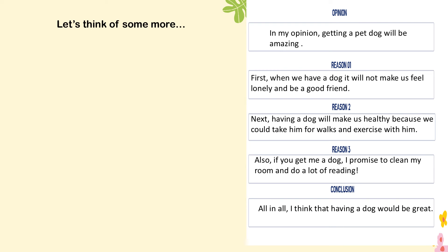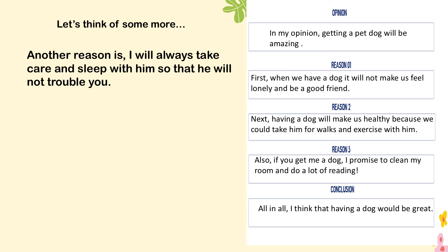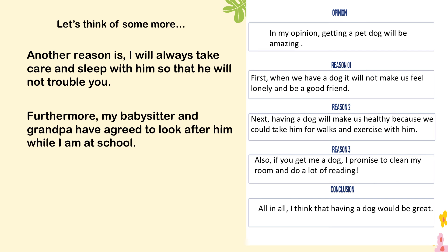Our opinion was to get a dog. Let's think of more reasons to convince our parents. Another reason: 'I will always take care and sleep with him so that he will not trouble you.' Furthermore — another sequencing word — 'my babysitter and grandpa have agreed to look after him while I'm at school,' so the parents will not have to worry about the dog when they're out. Finally, 'dogs are cute and fluffy.' Then we have the conclusion. Pause the video to see how we have done our brainstorming and how our persuasive text came out.